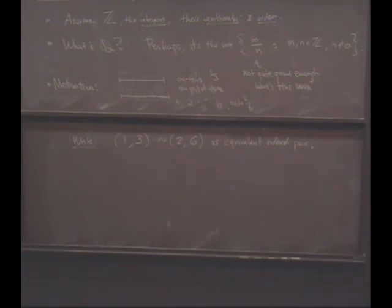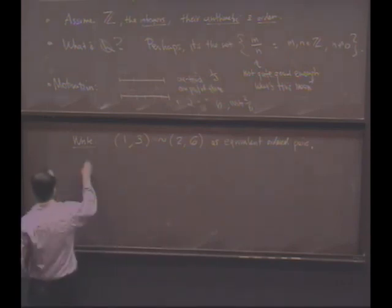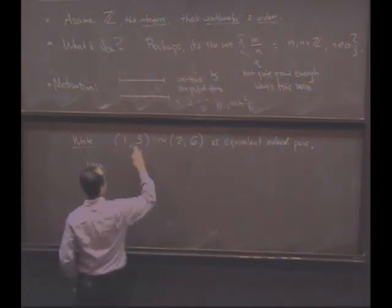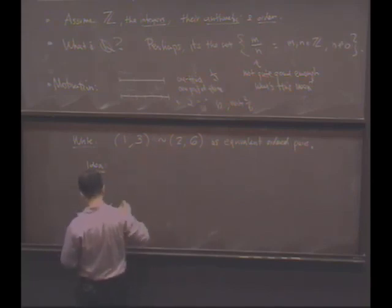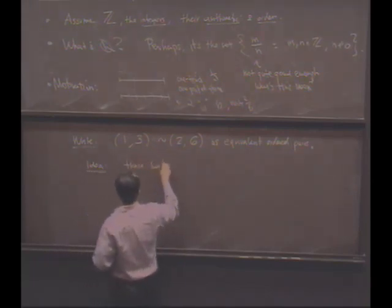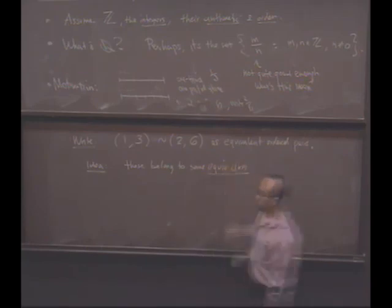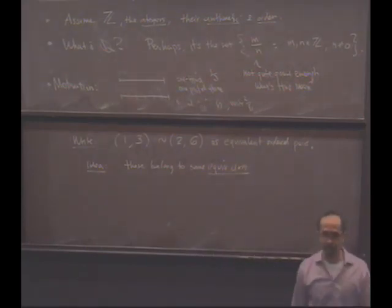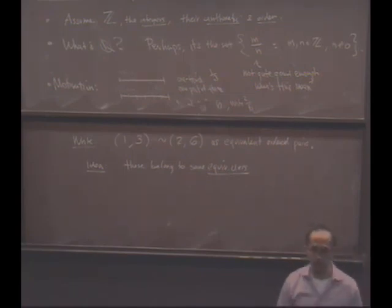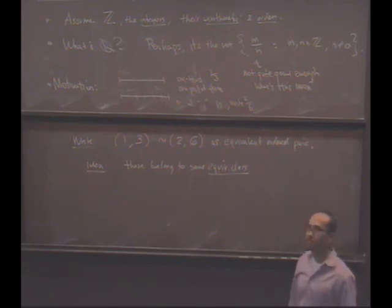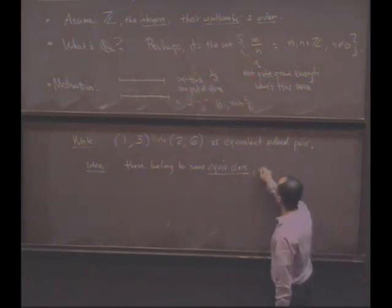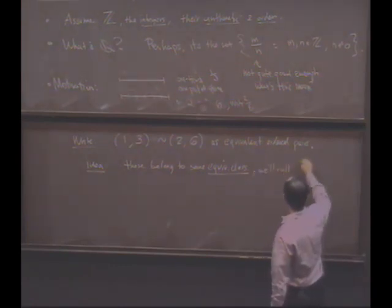And then what I will do, if I can, is once I figure out what all the things that are in the equivalence class are, the idea is that these belong to some equivalence class that might have lots of other things in it. Like 10 comma 30, or 121 comma - why did I torture myself - 363. These belong to some equivalence class, and we'll give that a name. We'll call that equivalence class one-third.